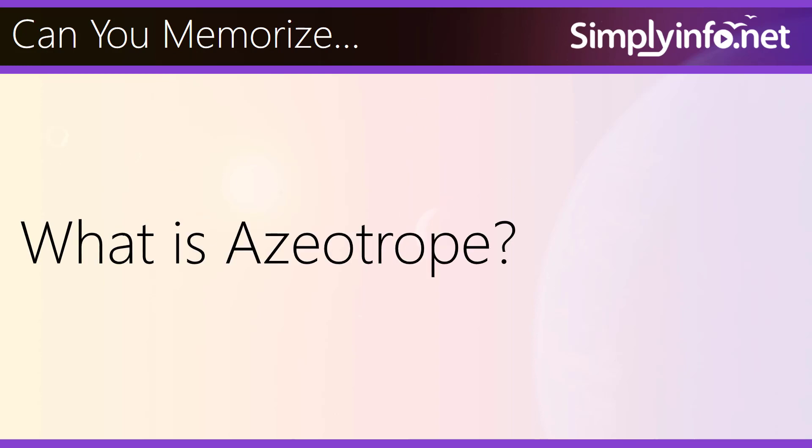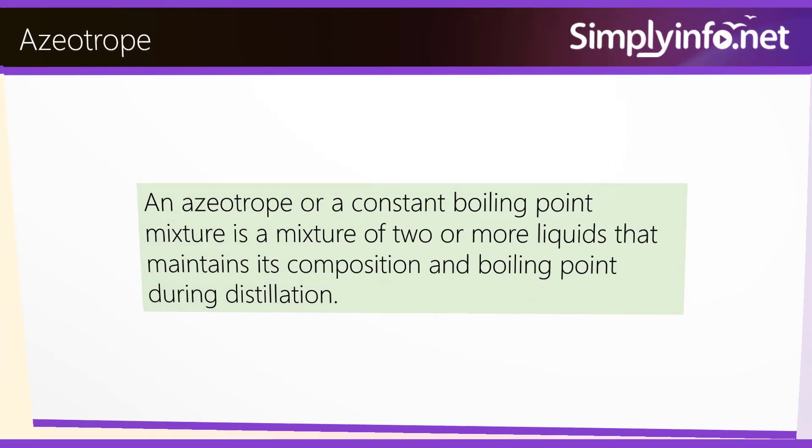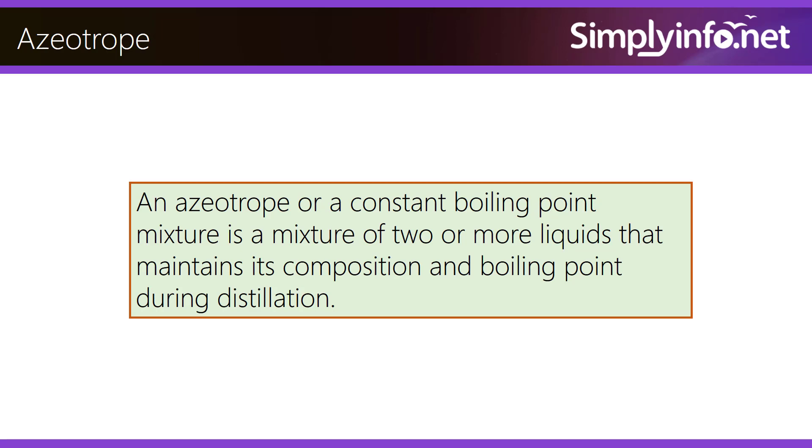To summarize, an azeotrope is a constant boiling point mixture of two or more liquids that maintains its composition and boiling point during distillation.